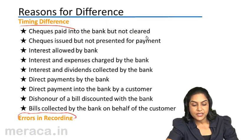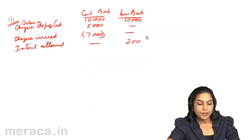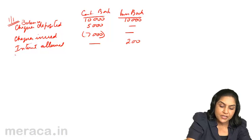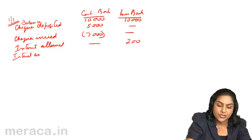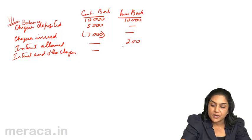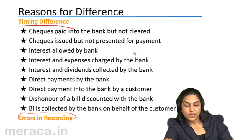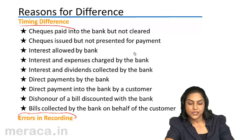Interest and expenses charged by the bank: we come to know about these only on preparation of the bank statement. An amount of 500, for example, which the bank has deducted from our account — we are not aware of it as of the 1st.